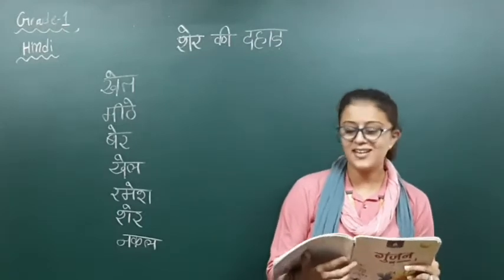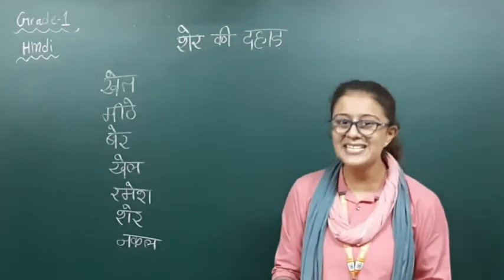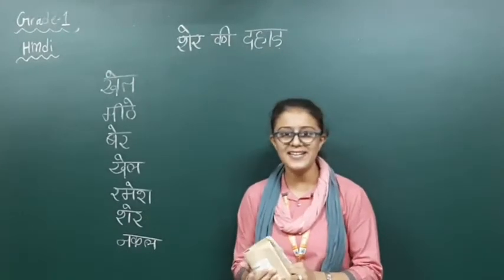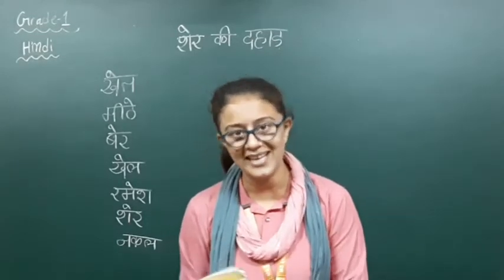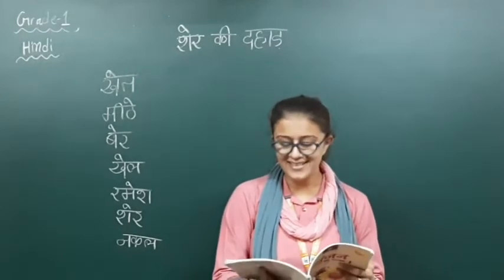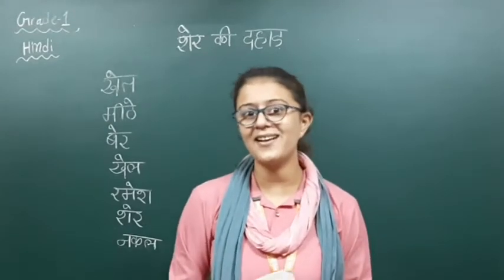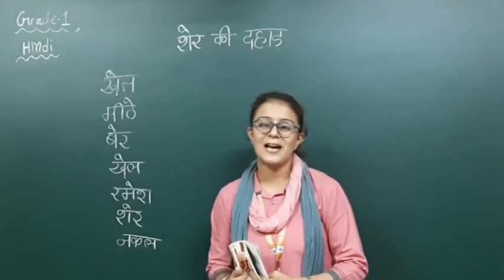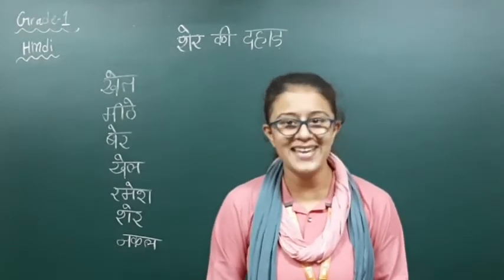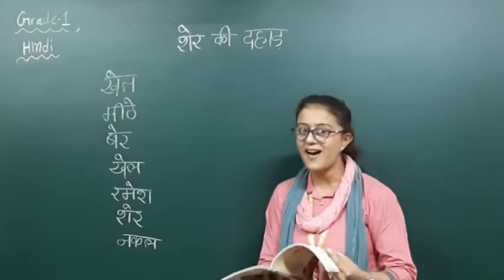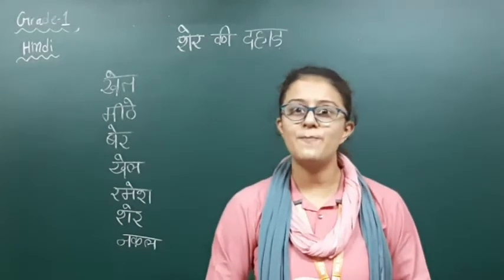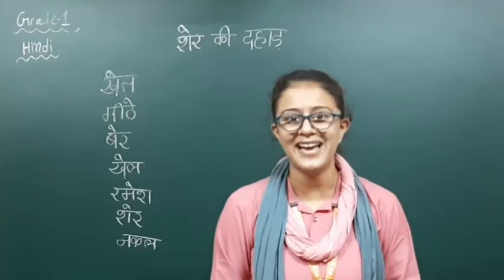Ruk jao — yahan sher nahi tha. Yahan Ramesh ne sher ki nakal ki thi. Ab kya bol raha hai ke yahan sher nahi hai, yahan to Ramesh hai jisne sher ki nakal utari hai. Sab dar gaye the — waah, kitni bhayankar nakal thi! Sab ko laga yahan to asli ka sher aa gaya hai. To kya bol rahe hai — saare dost Ramesh ko bole, Ramesh aapne toh bahut hi badhiya anti ki thi, bilkul sher ki dahaad thi. Jaisi usne haath nippani ki sher ki — woh bilkul sher se milti julti thi.